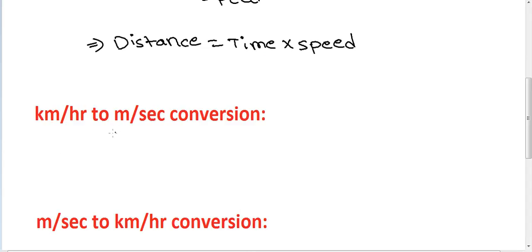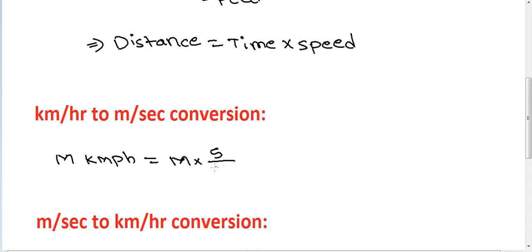Conversion: kilometer per hour to meter per second. One kilometer per hour equals m into 5 by 18 meter per second. So to convert km/h to m/s, multiply by 5 over 18.